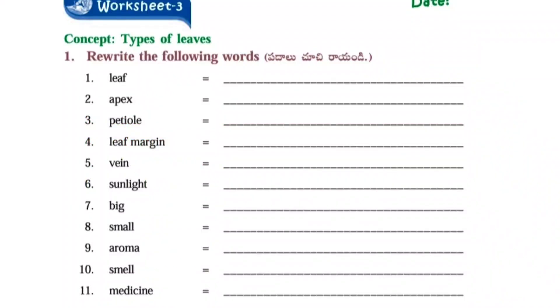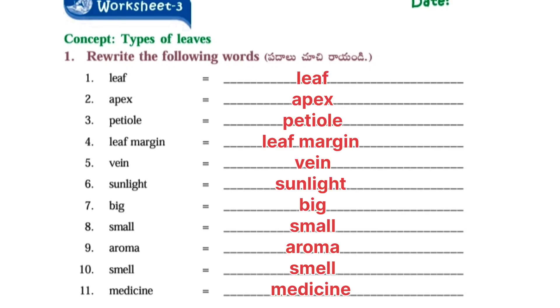Next worksheet number three: Concept types of leaves. Rewrite the following words: concept types of leaves, leaf, apex, petiol, leaf margin, vein, sunlight, big, small, aroma, smell, medicine.